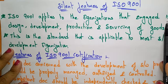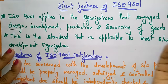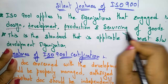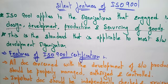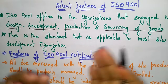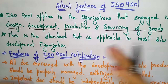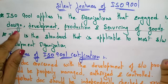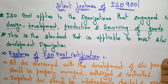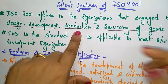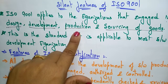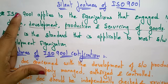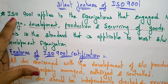ISO 9001 applies to organizations that are engaged in design, development, production, and servicing of goods. Whatever organization you are having, if that organization is following these criteria — developing a product using a systematic approach in designing, development, production, and servicing of goods — then that organization can be engaged with this standard ISO 9001.